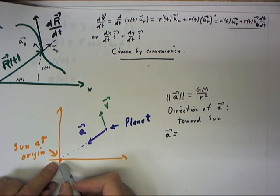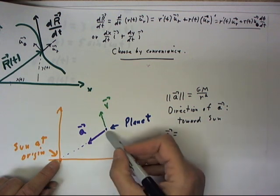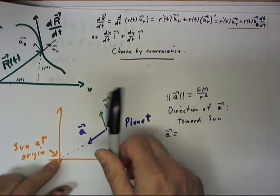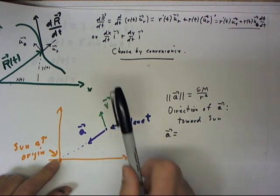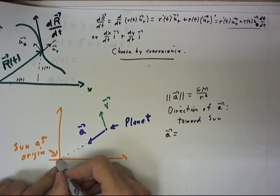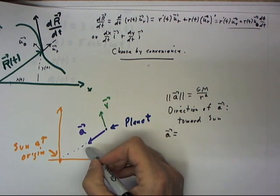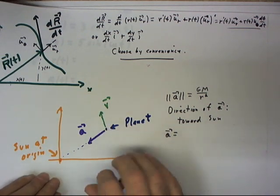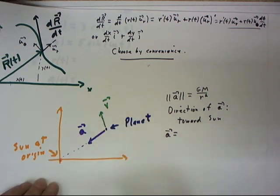Here's the situation. We're going to say we have the sun and a planet. The planet is moving with some velocity v in some direction. Now, the sun and the planet attract one another gravitationally.